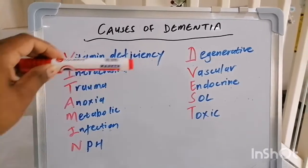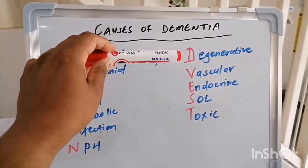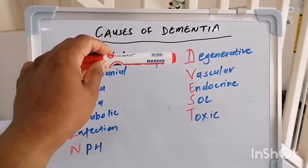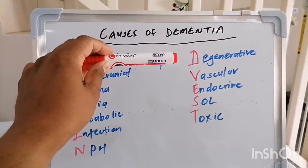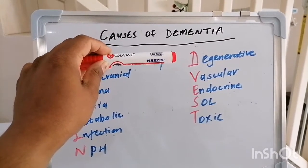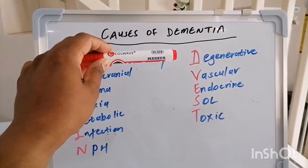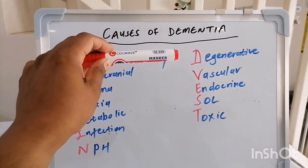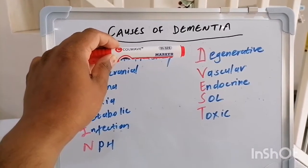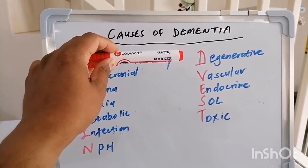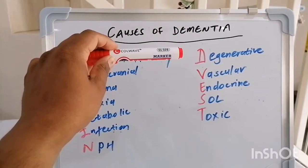N and P and H is normal pressure hydrocephalus. D speaks to degenerative issues, and here we speak to things like Alzheimer's, Huntington's, or Creutzfeldt-Jakob disease, which presents as spongiform encephalopathy, otherwise more affectionately termed mad cow disease.